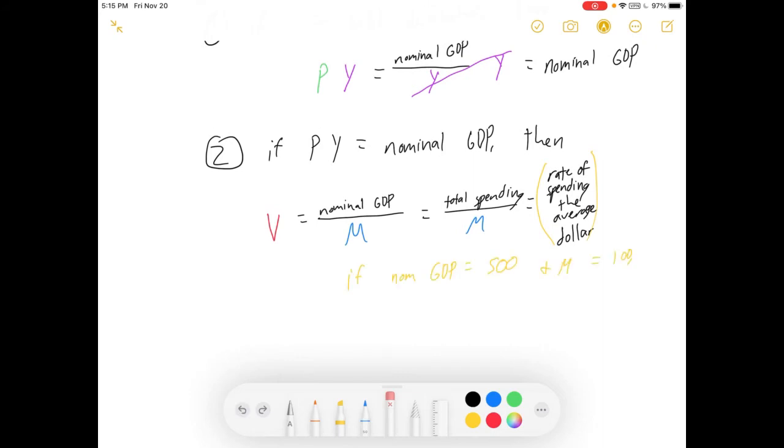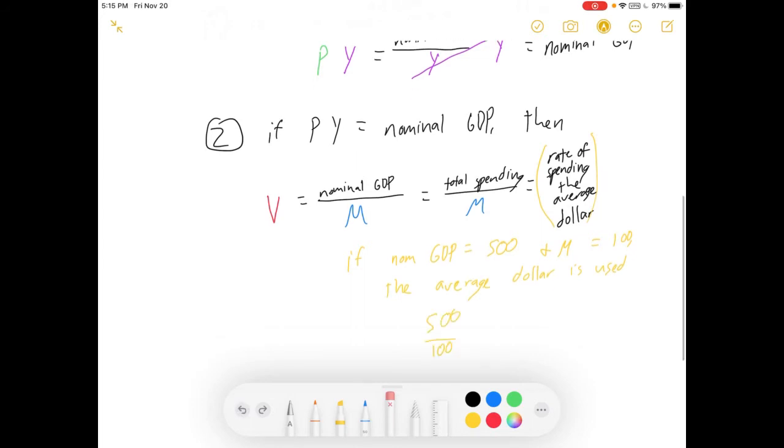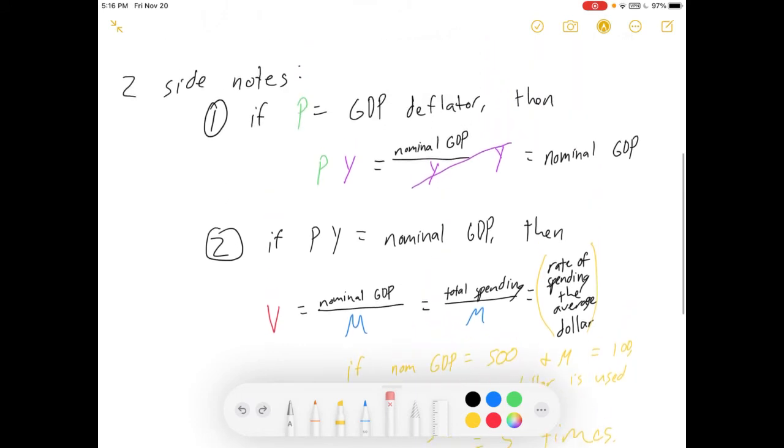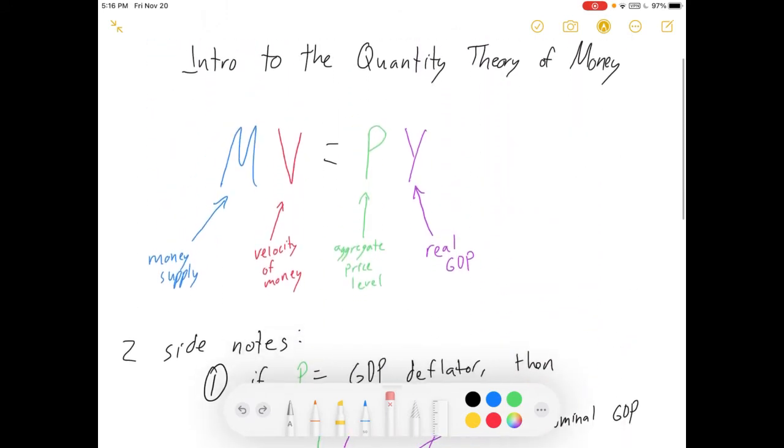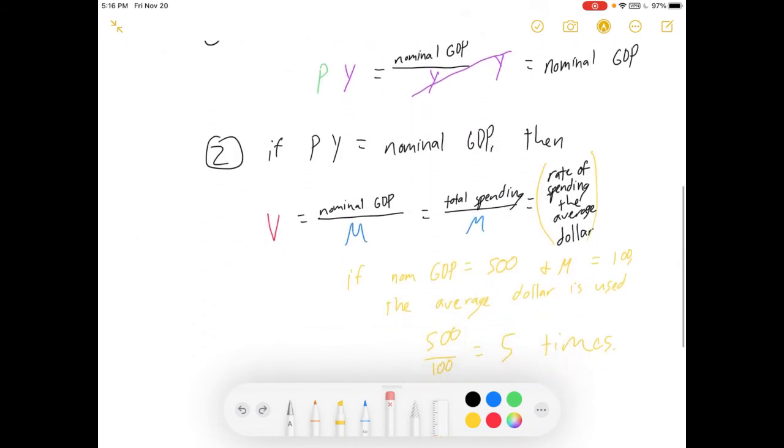How many times does each dollar go around the economy on average? That's the velocity of money. All the spending divided by how much money tells you how much each dollar got spent on average. So if nominal GDP were 500 and we had a money supply of 100, the average dollar is used 500 divided by 100 times, which is five times.